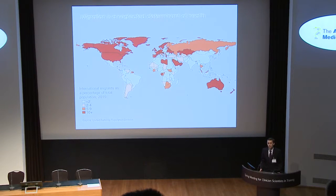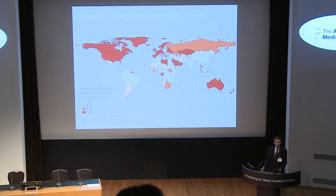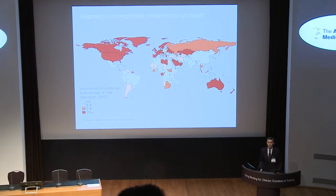Migration, I believe, is a neglected determinant of health, most depressingly and horribly witnessed by the drownings we've seen in the Mediterranean this summer. But it's more subtly a determinant of health as well. For example, we see poor outcomes in maternal and child health in women in London who book for their pregnancies late and have poor outcomes as a result. What I'm going to talk about today is tuberculosis and migration as a determinant of tuberculosis.